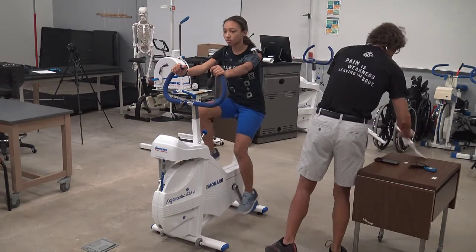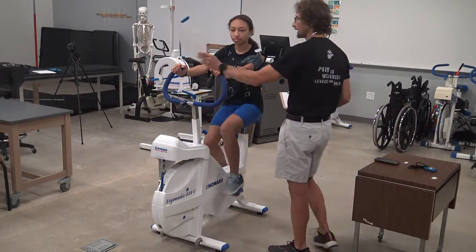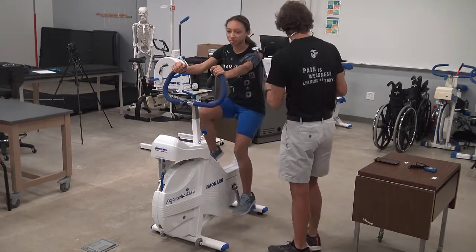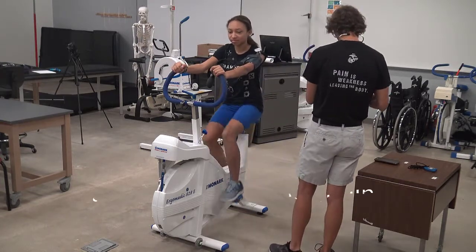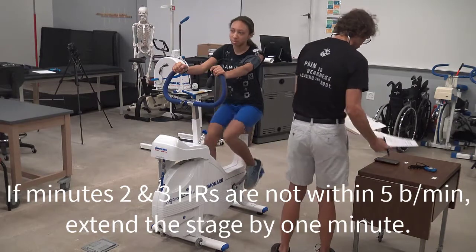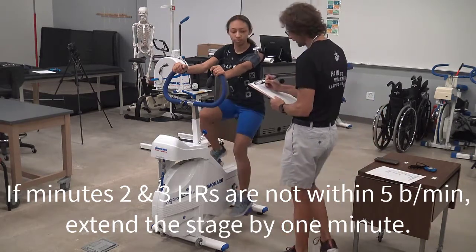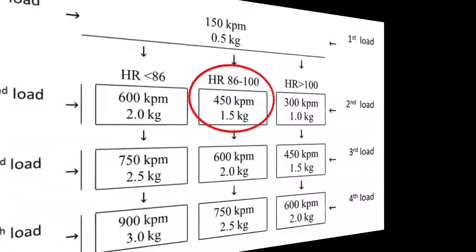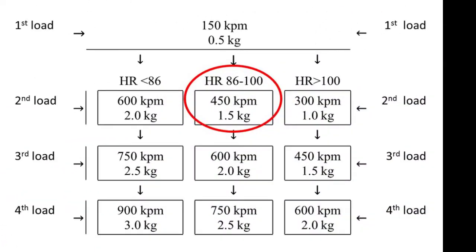Since the minute two heart rate was 92 beats per minute, minute three heart rate was 94 beats per minute, that's less than a five beat difference and tells us that our client is in steady state. Had the third minute heart rate been over five beats per minute difference from the second minute heart rate, then we would have had to extend the stage into a fourth minute. Since our client's heart rate was 94 beats per minute, we looked at our flow chart and under the appropriate column we see we need to add one kilogram of resistance for stage two.